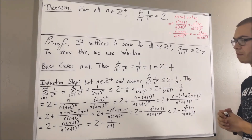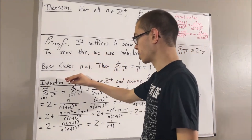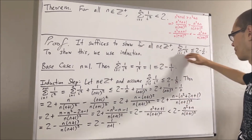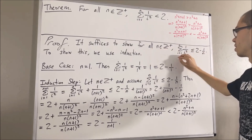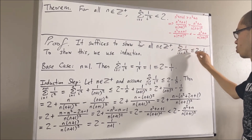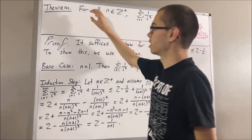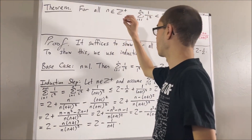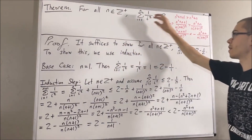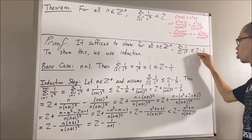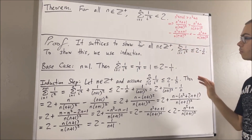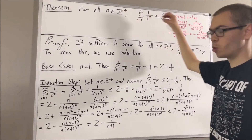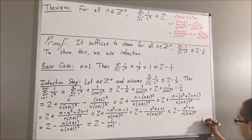So this completes the induction step. And because we've completed both the base case and the induction step, this closes the induction. So we have proven that for all positive integers n, the sum from i equals 1 to n of 1 over i squared is less than or equal to 2 minus 1 over n. And this proves the theorem, because for any positive integer n, this sum is less than or equal to 2 minus 1 over n, and 2 minus 1 over n is less than 2. Therefore, this sum must be less than 2. So this completes the proof.